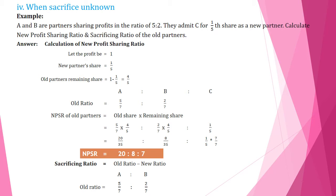The fourth topic is when sacrifice is unknown. This type of adjustment is very important and often appears as an exam question. When sacrifice is unknown, the old partners' sacrifice will not be given in the question. A and B are partners sharing profits in the ratio of 5:2. They admit C for one-fifth share as a new partner. Let the profit be 1. New partner's share is 1/5, so old partners' remaining share is 1 − 1/5 = 4/5.